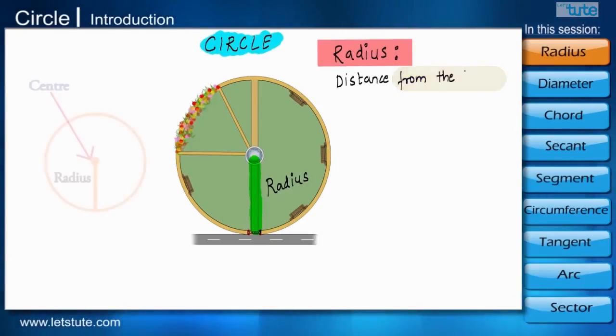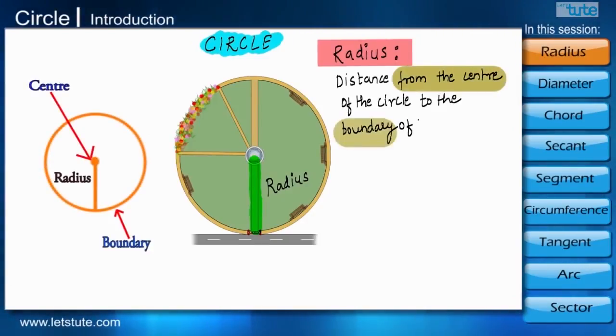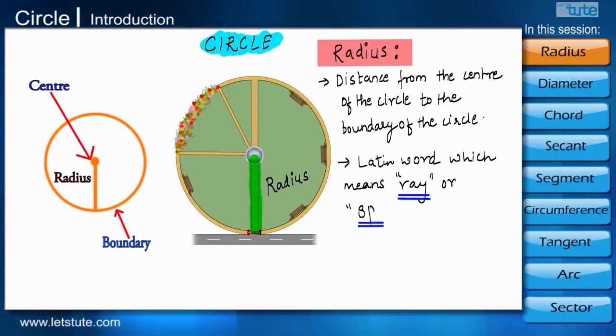The radius is the distance from the center of the circle to the boundary of the circle. Radius is a Latin word which means ray or the spoke of a wheel. Radius is denoted by a small letter r.